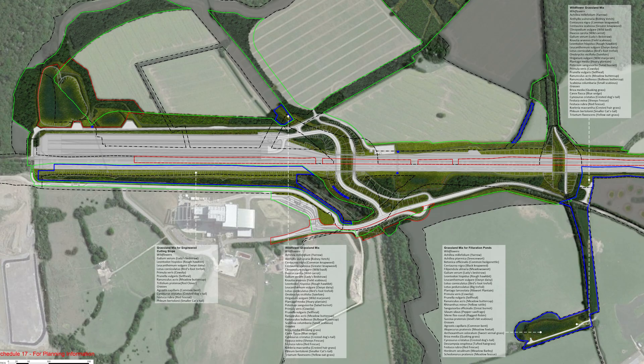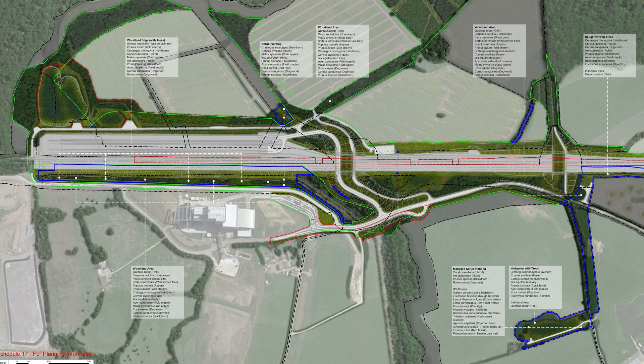We now reach the area around Great Moor Power Station, and this is the grassland mixes shown here. And now the woodland and hedgerows.